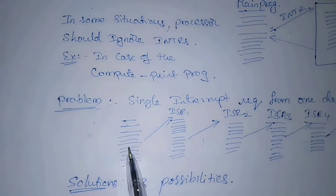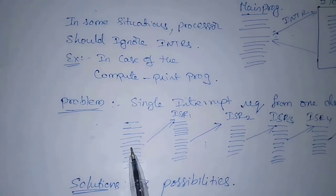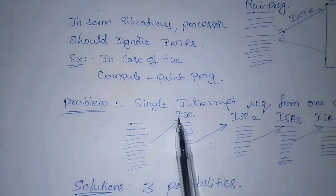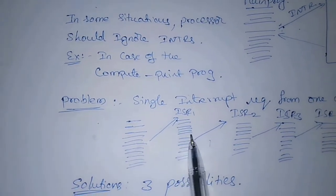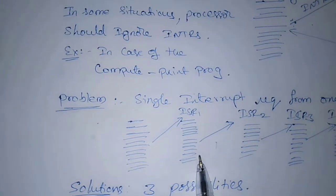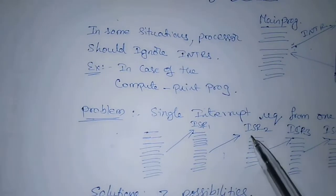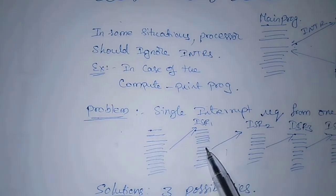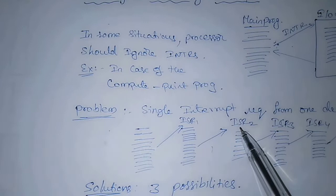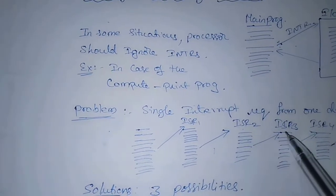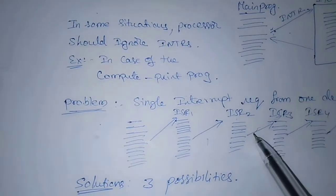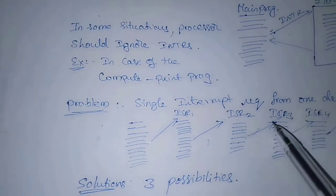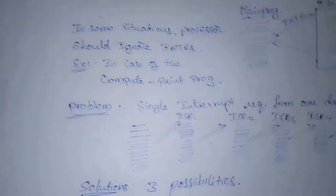Then, processor stops the execution of the current program and jumps to the interrupting device, jumps to the corresponding ISR and starts execution of ISR1. Again, request is coming from the ISR2, then processor stops the ISR1 and then jumps to ISR2. Again, request is coming from ISR3 and processor stops the execution of ISR2 and then jumps to ISR3.